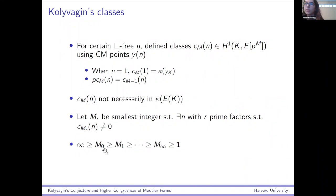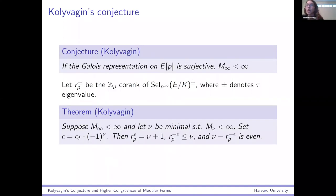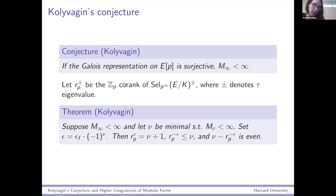Because this is a decreasing sequence of integers, it has some limit M_infinity. Kolyvagin's conjecture is that this M_infinity number is finite. He wrote this down when the Galois representation is surjective, but I don't think people expect that to really be necessary — that's something he used in his Euler system arguments in his paper.